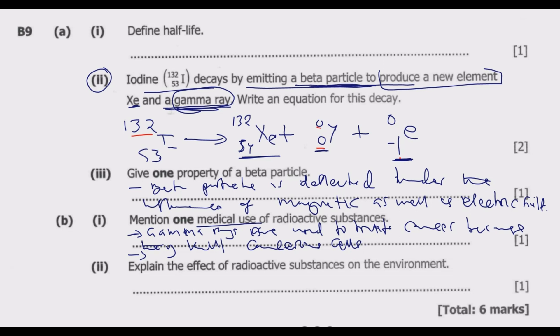Part 2 of B, explain the effect of radioactive substances on the environment. One effect is they can damage living cells. So they can damage living cells. So because of this, they can become dangerous to living things in a given environment.